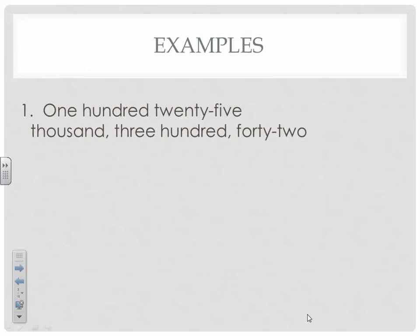So we're going to try an example. This says one hundred twenty-five thousand, three hundred forty-two. I'd like you to pause and see if you can write down what the actual number is. Here it is: 125,342. Hopefully yours matches mine. Let's try another one.